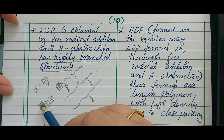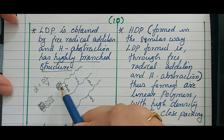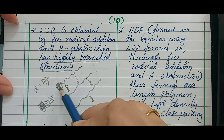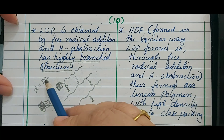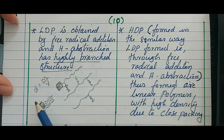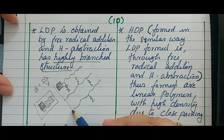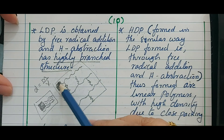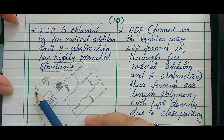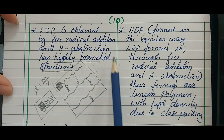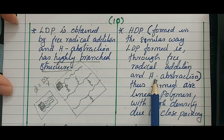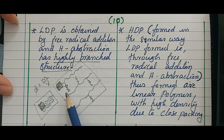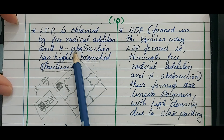So density will be more for HDP because volume is the same in both cases but mass per unit volume is more due to close packing. For LDP, mass per unit volume is less so density automatically becomes less. In both cases preparation involves free radical addition and hydrogen abstraction.